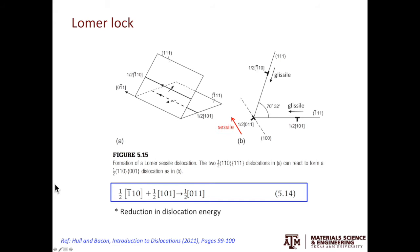In FCC metals, the 1-1-1 planes are the slip planes. And from Thomson tetrahedron, we learned there are many intersections of those 1-1-1 planes. In the example shown here, we have the first dislocation gliding on 1-1-1 plane with half 1-bar-1-0 Burgers vector.